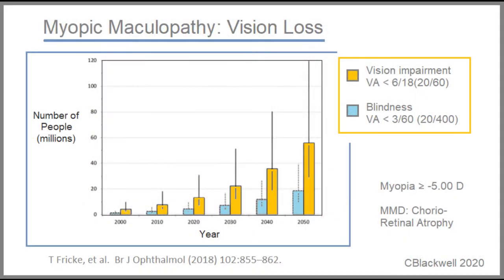A 2018 meta-analysis used data from previous worldwide studies to estimate future vision loss due to myopic maculopathy. In the year 2000, it was estimated about 4.2 million people had vision impairment from myopic maculopathy. By 2050, that number is predicted to jump to 55.7 million. Regarding blindness, in the year 2000 there were 1.3 million people who were blind from myopic maculopathy, and that is estimated to rise to 18.5 million by 2050.